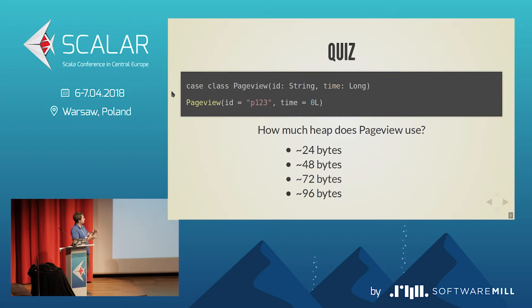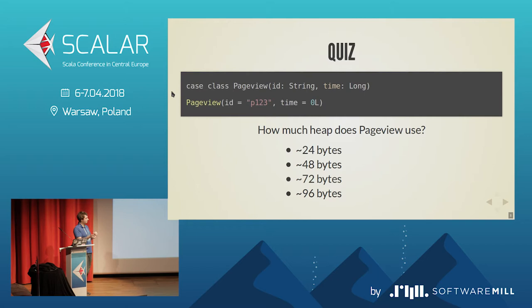But we forgot that the string itself is also an object — you cannot plug one object into another; you need to store a reference to that object. And this object also has a header, so maybe it's 48 bytes. But then the character array inside the string is also an object, so we need a reference to the character array, and for an array we also need a length. Maybe it's 72 bytes?